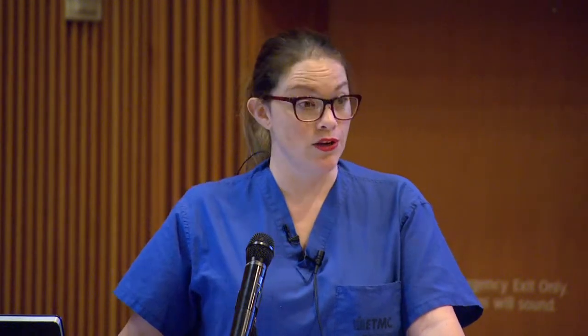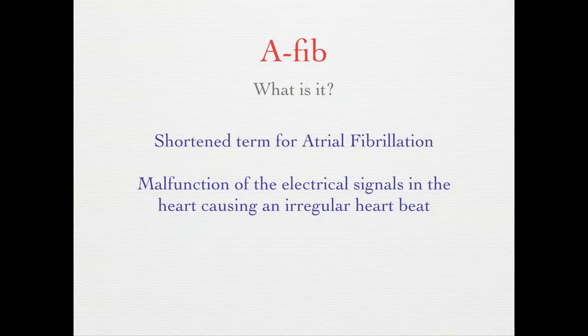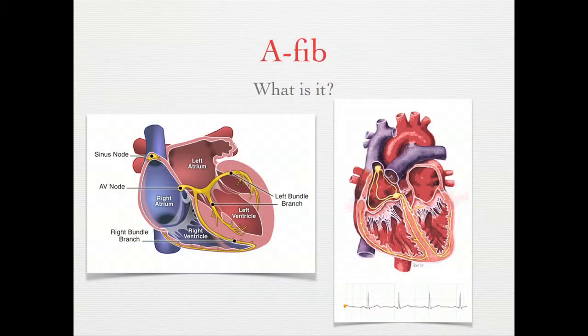The first thing we're going to talk about is AFib — atrial fibrillation — which is one of my specialties. It's a malfunction in the electrical system of the heart. Normally the heartbeat comes from your heart's pacemaker, starting up top in the atrium in an area called the sinus node. It sends a signal out like a wave until it reaches something called the AV node that catapults it through the ventricle. Everything is nice and coordinated.